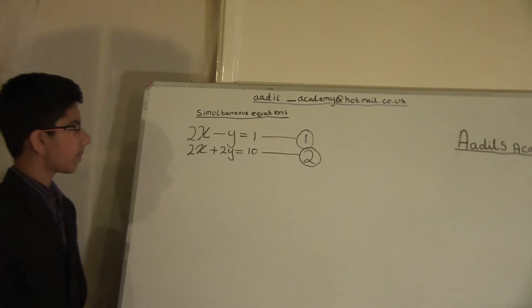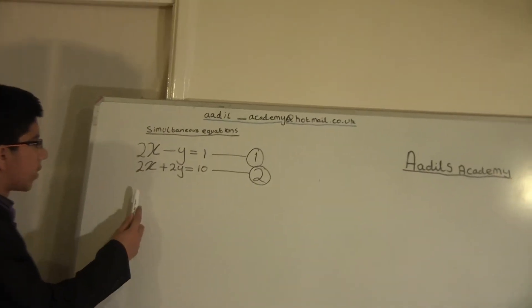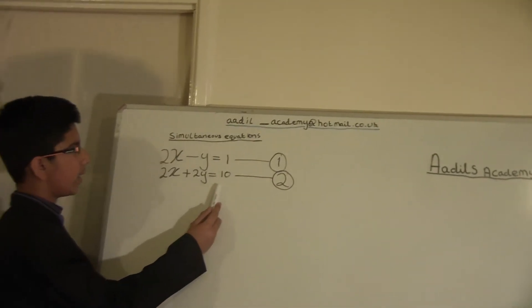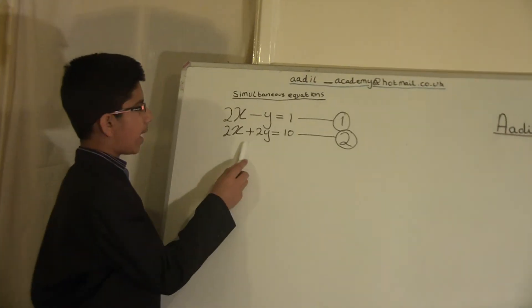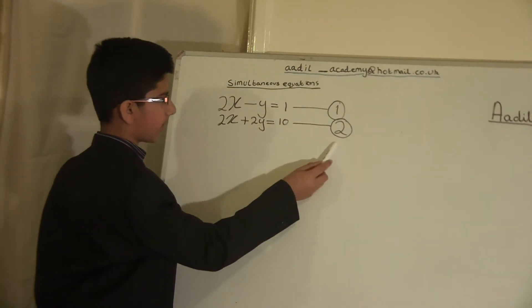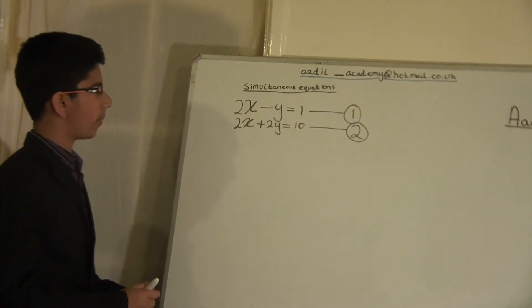So let's start. Today our question will be 2x minus y equals 1, and that is equation 1. And 2x plus 2y equals 10. That is equation 2. So let's go from there.